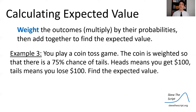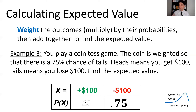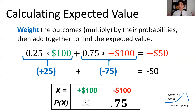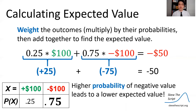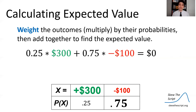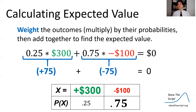Now say the coin is weighted with a 75% chance of tails — an unfair coin. Going back to the original values: heads gets $100, tails loses $100. Now there's more weight on the negative outcome because it happens more often, so the expected winnings or losses on average would be about $50 lost. Finally, if the coin is weighted at 75% tails but heads now wins $300 and tails loses $100, the higher win value and higher loss probability balance out to exactly $0 expected value.